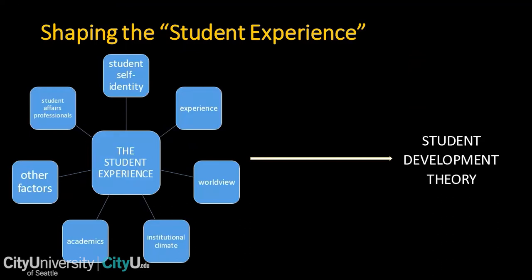Student development theory and shaping the student experience — how did we get to the point of even talking about what a student experience is? Student affairs and student development theory emerged around the 1930s and 40s, primarily from the field of psychology. Social scientists asked: what are the types of experiences students have when they go to a higher education institution? At the time, traditional 18-19 year-old students were going off to college, and there was the concept of 'in loco parentis' — in place of the parent.